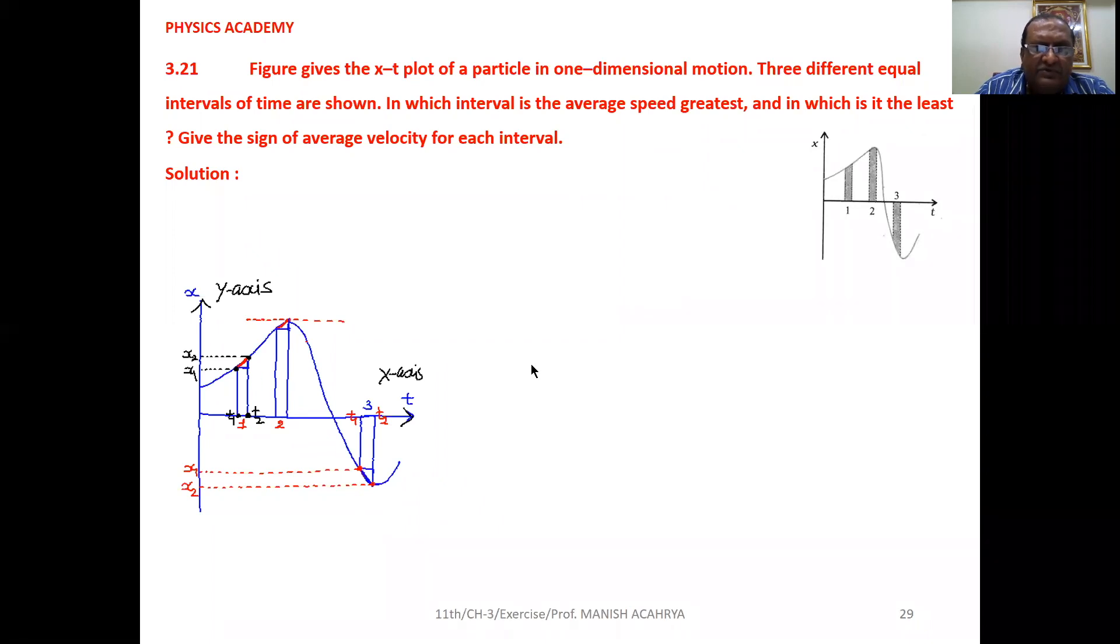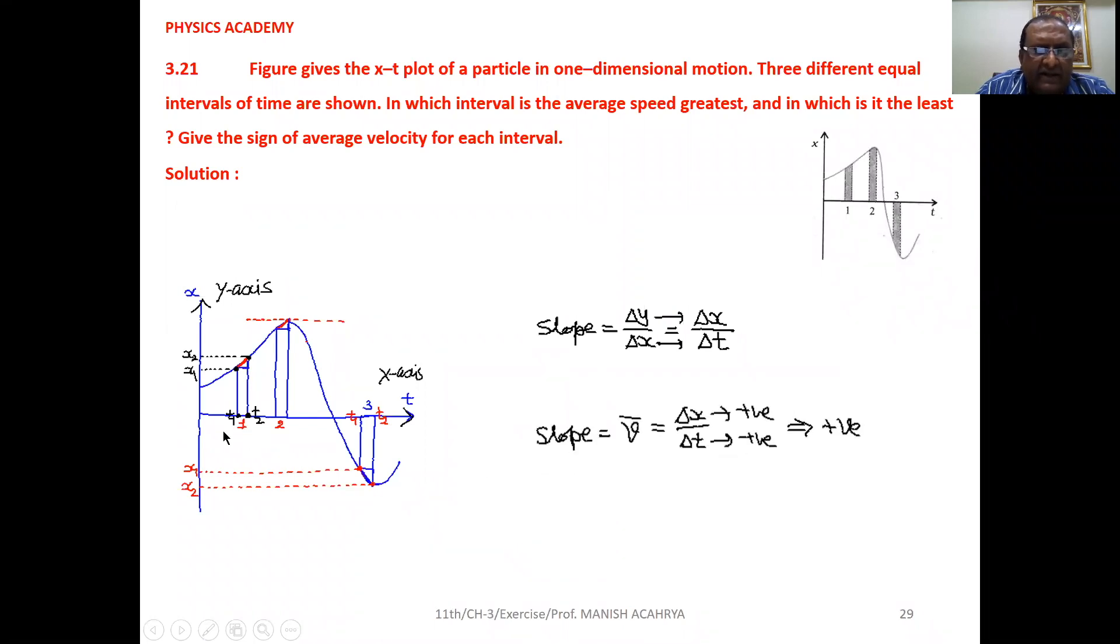Suppose we think about the time interval, this first one. Then here, during this time interval for this particular part of the graph, if we find out the slope, then that small line is upward. Means here you can observe x2 is greater than x1. So for this part, the slope that is positive. So velocity is positive.